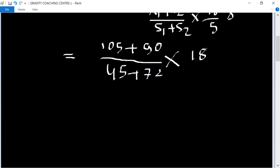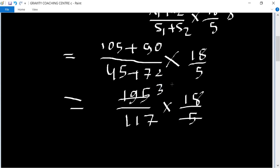After adding 195 upon 117 into 18 upon 5, 195 cancel by 5, so it is 39. 117 will cancel at the table of 3, so 6 times 3 is 18 equal to 6 seconds.